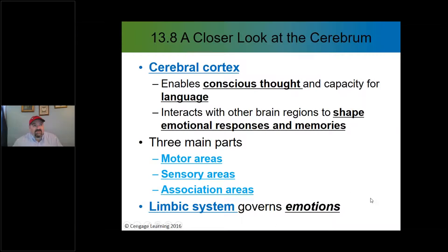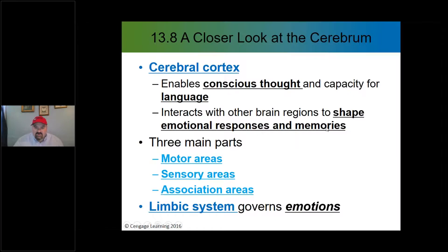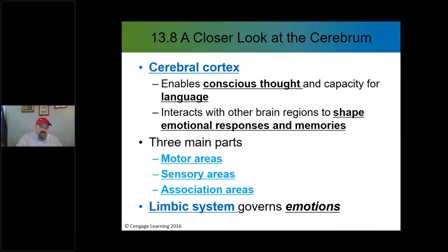The cortex is the outer portion of the cerebral hemisphere. This is the area where much of who you are as a person resides — your conscious thought, your capacity for language, your emotional responses, and your memories. The frontal lobe in particular is key. There are areas for control of motor activities, sensory areas for receiving information from receptors throughout the body, and association areas. We also have the limbic system — the emotional brain — comprising many inner structures of the brain.